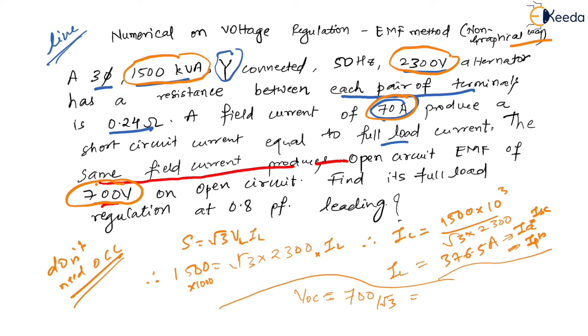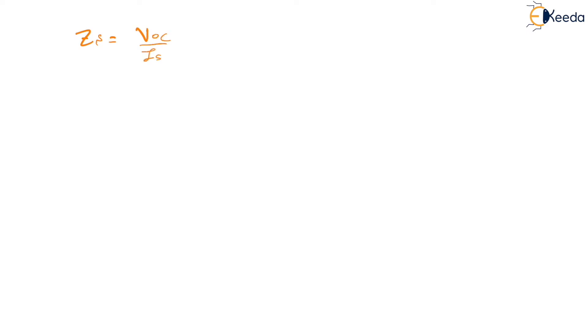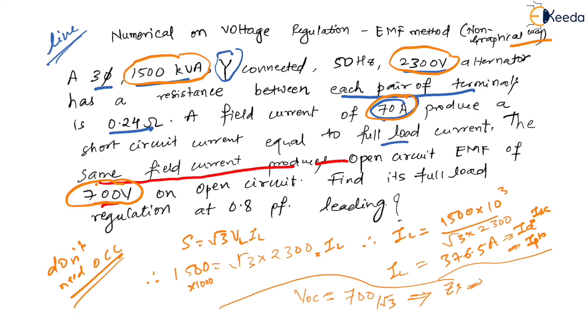Since VOC and ISC are both known at the same field current, we can find ZS. ZS = VOC / ISC, evaluated at the same field current. The question itself states that the same field current produces both the short circuit current and the open circuit voltage — that is the key sentence here.